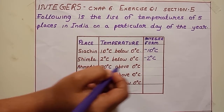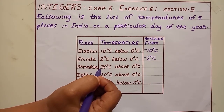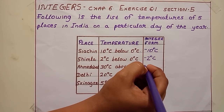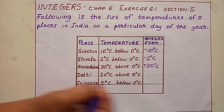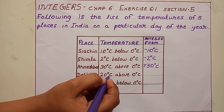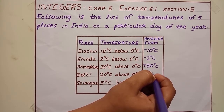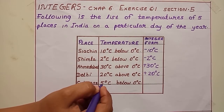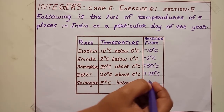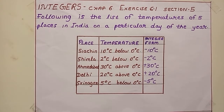Ahmedabad: 30 degree Celsius above 0 degree Celsius. Above means we should take a positive sign, so positive 30 degree Celsius. Delhi: 20 degree Celsius above 0 degree Celsius. Again, positive, so 20 degree Celsius. Srinagar: 5 degree Celsius below 0 degree Celsius. Below means we should give a negative sign, so negative 5 degree Celsius.